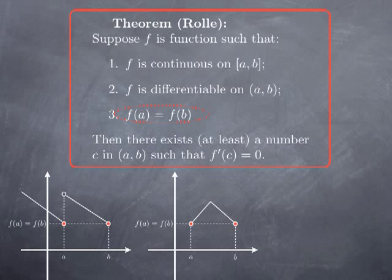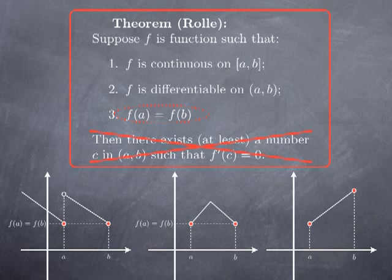Finally, we can have a function that is continuous on the closed interval and differentiable on the open interval, but where the values at the endpoints are not the same — and in that case the tangent line is never horizontal. So if any one of these three assumptions fails, then the conclusion is possibly false.